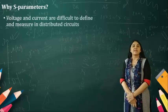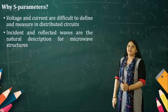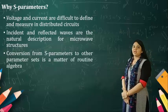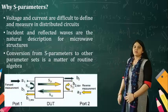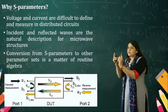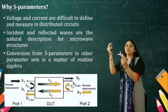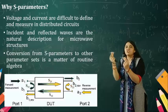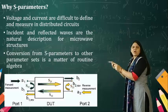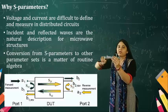Why S-parameters? Voltage and current are difficult to define and measure in a distributed circuit. The incident and reflected waves are the natural description for microwave structures. Conversion from S-parameters to other parameters is a matter of routine algebra. Consider the device under test with port number one and port number two. When passing an input wave from port number one, a matched load is connected at port number two.